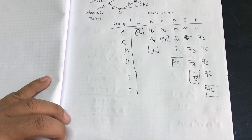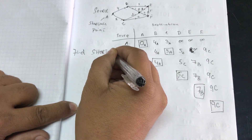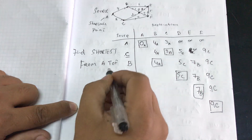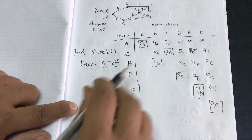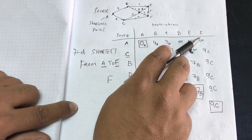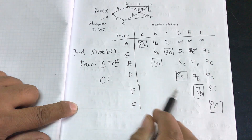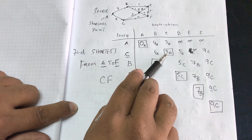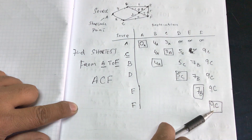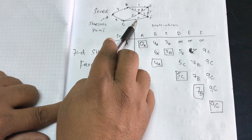Now I need to find the shortest distance from A to F. I go to F in my table — it shows 9C, meaning it came from C. I trace back: F came from C, and C came from A. So the shortest path is A → C → F, with a total distance of 3 plus 6 equals 9.